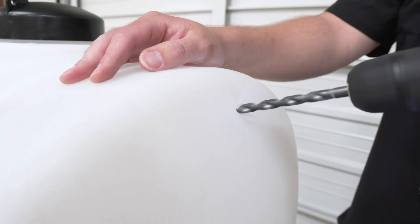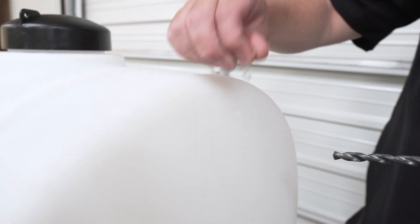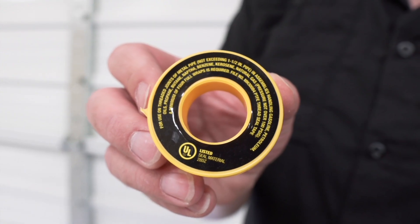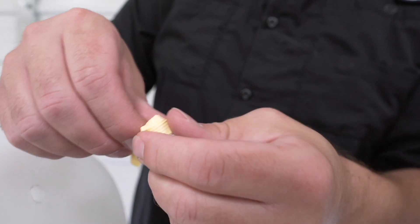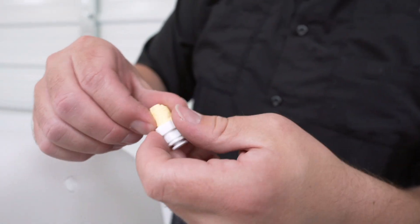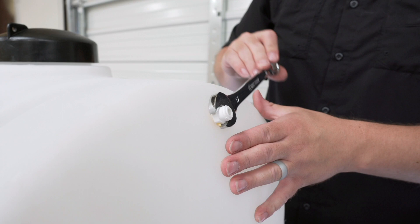You take the fitting, apply Teflon tape to help mitigate for any type of leakage or anything like that. You simply screw it in until it's a tight fit, and then you insert the tubing, and you're done.